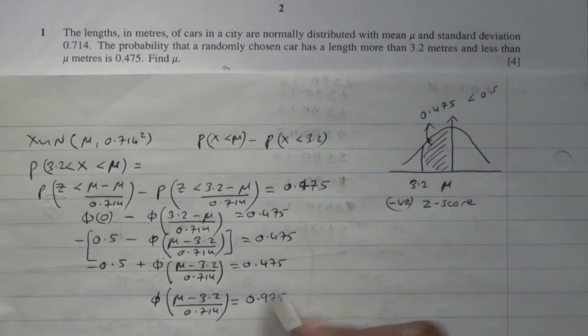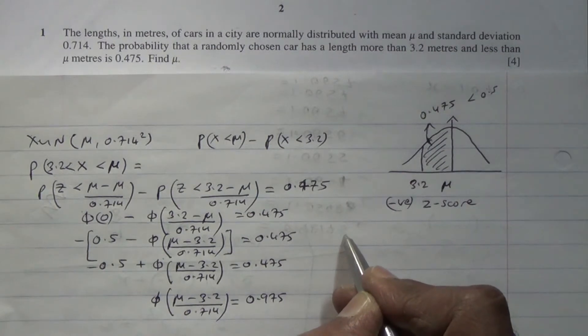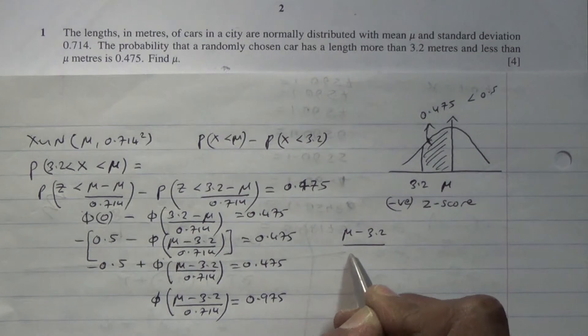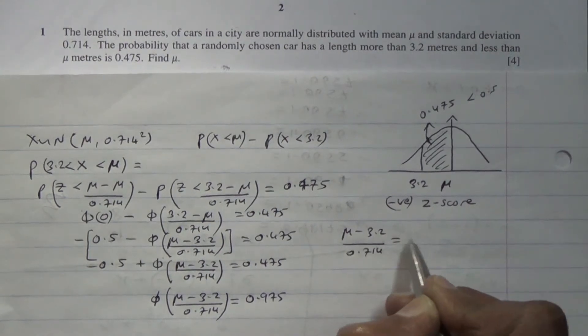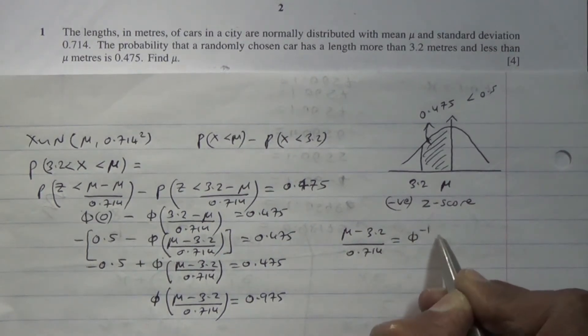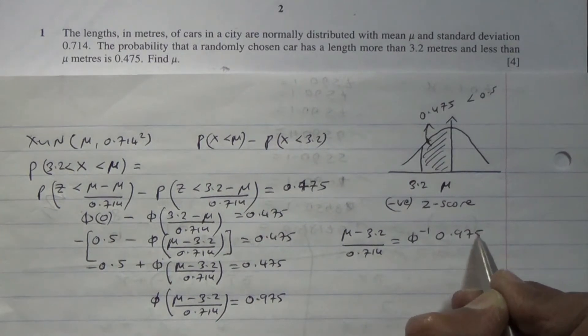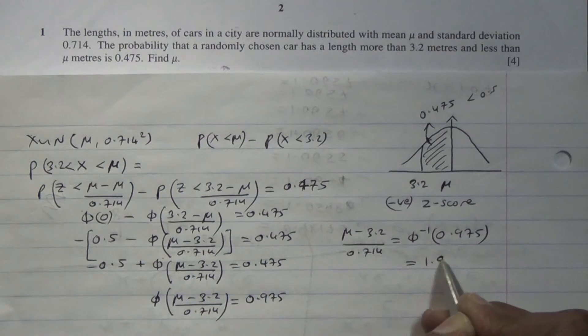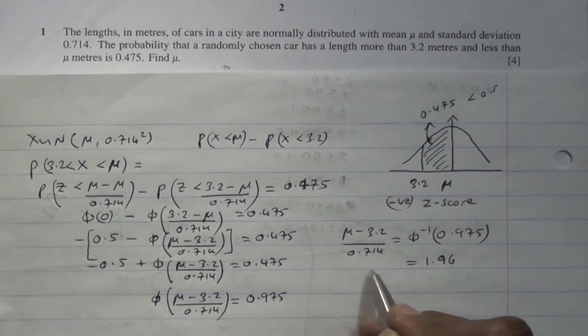So we're looking at mu minus 3.2 divided by 0.714 is equal to the inverse phi of 0.975. If you look at that from your table, you're going to see it's going to be 1.96.